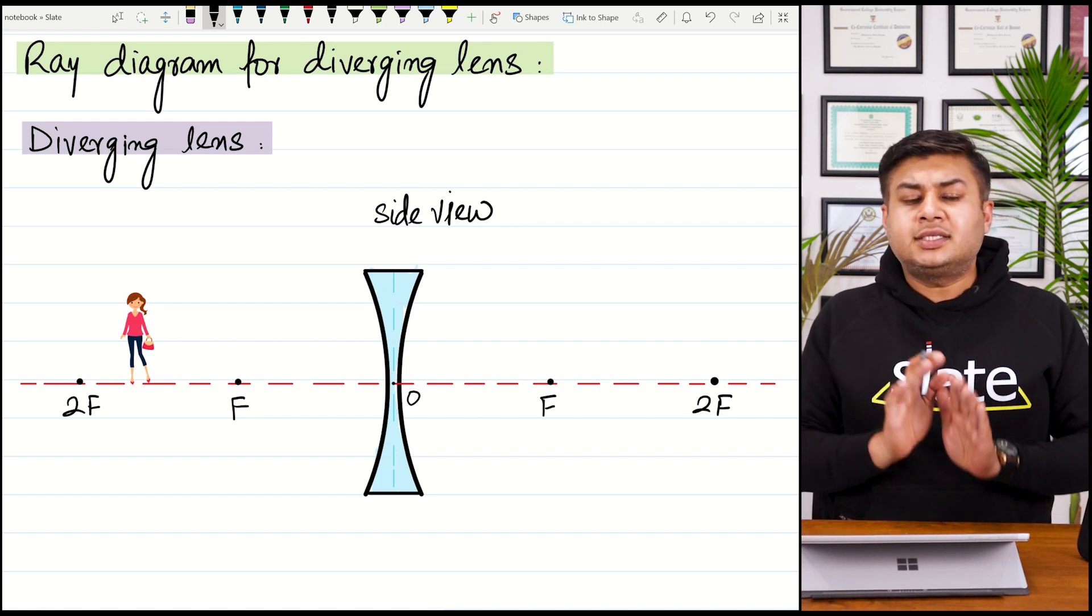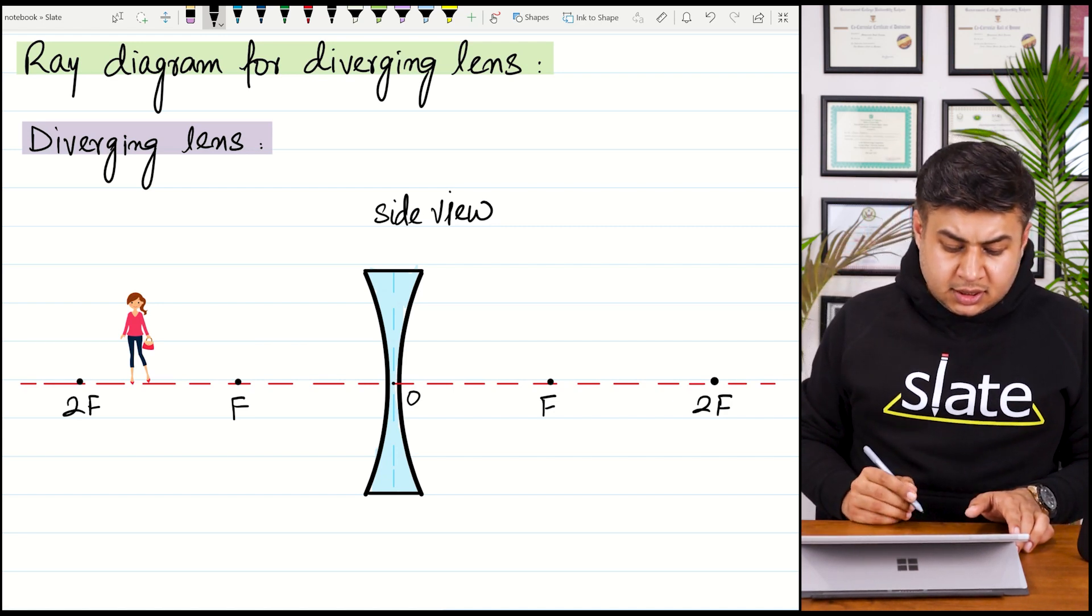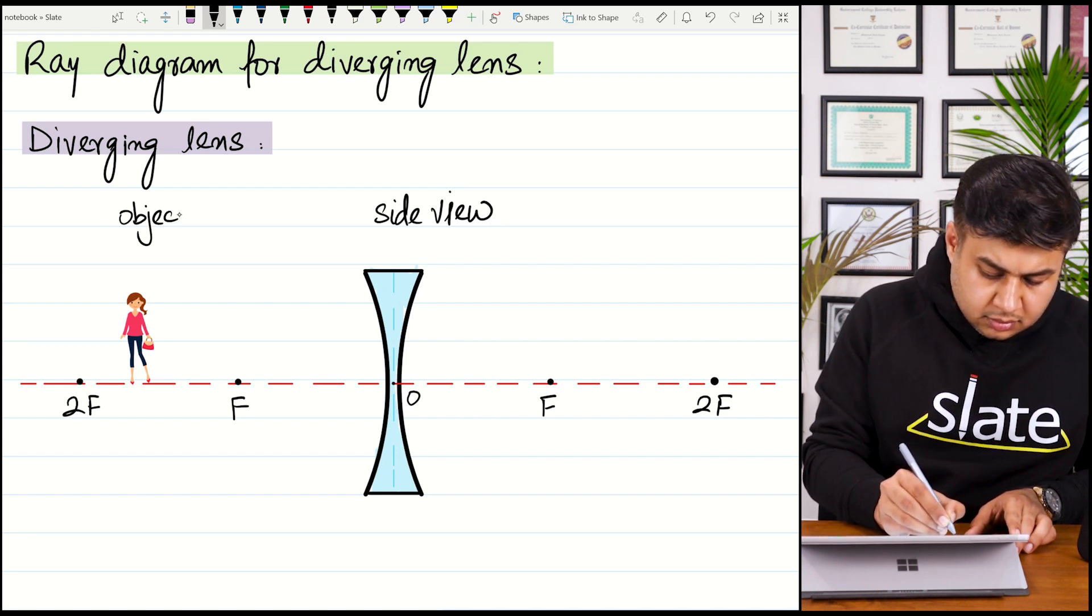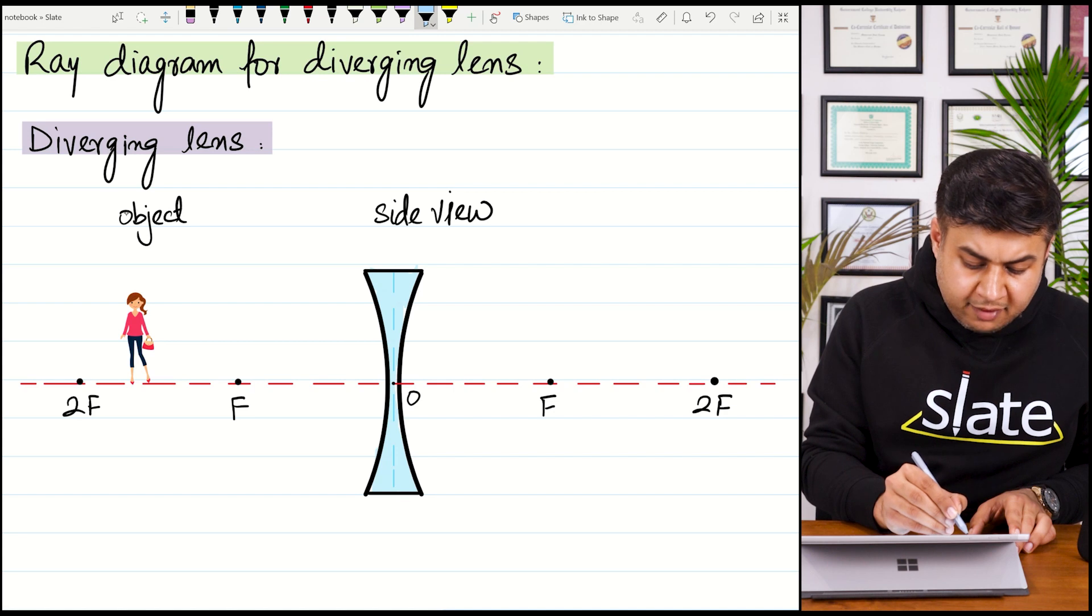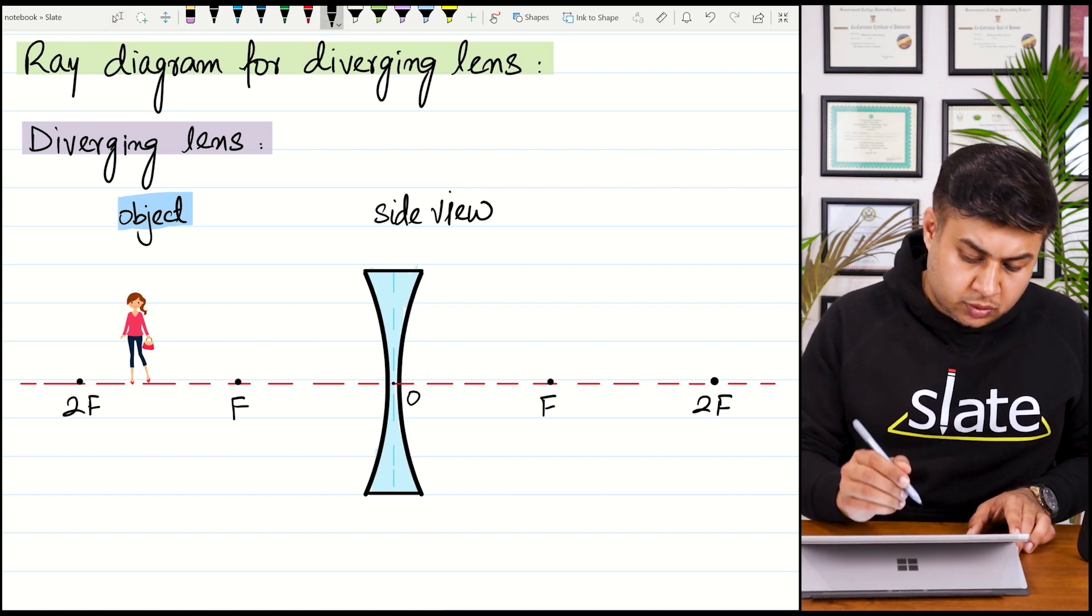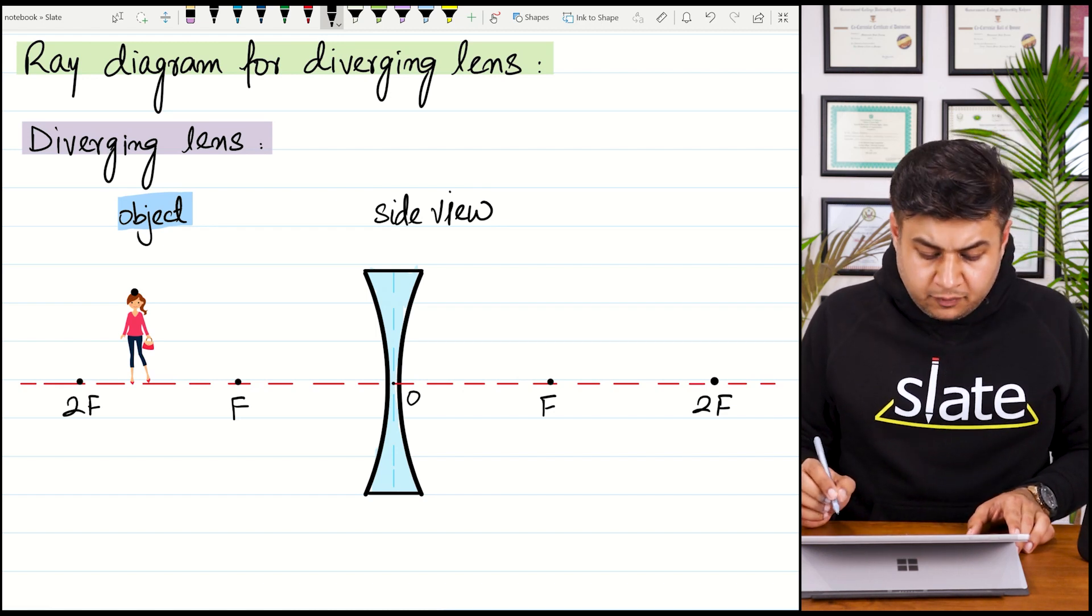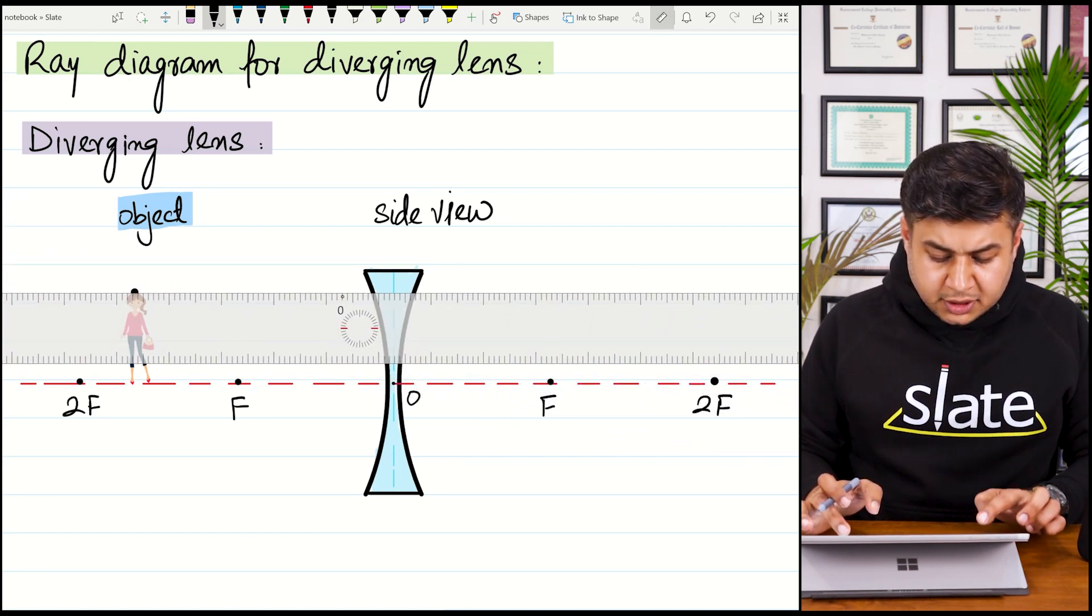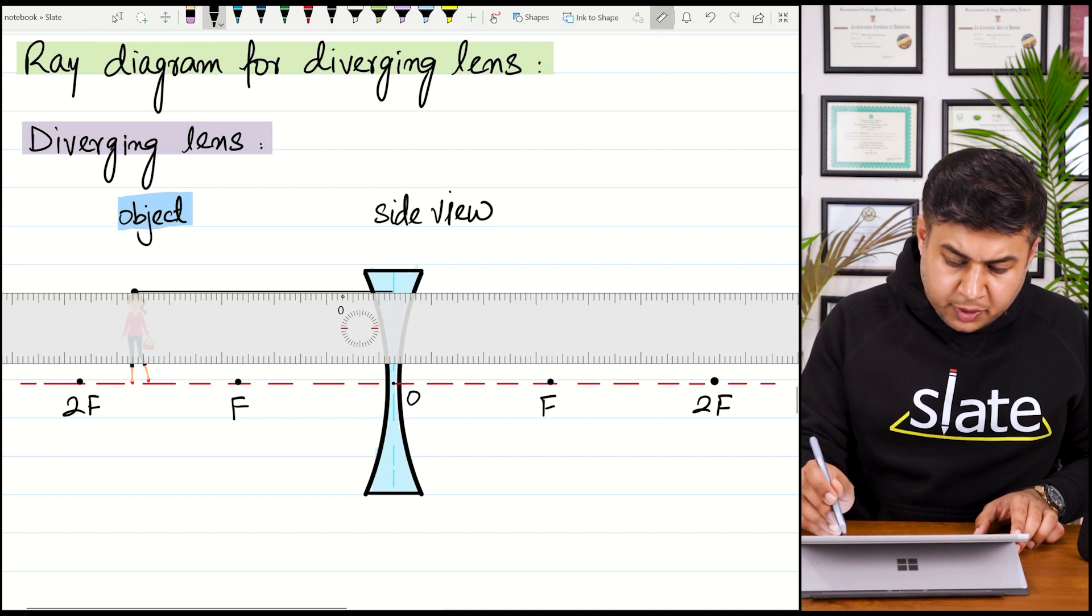If you understand this one scenario, you will be able to draw any ray diagram in the exam. So in this case, you can see this lady which is the object here. We will try to locate the image for this object. For this object, we will draw a ray diagram to find out its image. I will draw all the rays from this single point which is at the head of this lady. Firstly, I will draw a ray that is coming parallel to the principal axis.